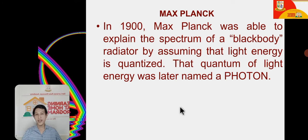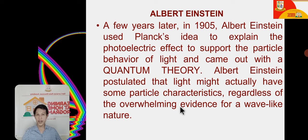In 1900, Max Planck experimented with a black body radiator and coined the term for the particles of light — photons. Then in 1905, Albert Einstein used Planck's idea and came out with the quantum theory. Einstein postulated that light might actually have some particle characteristics, regardless of the overwhelming evidence of a wave-like nature. This led to the famous E=mc² relationship.